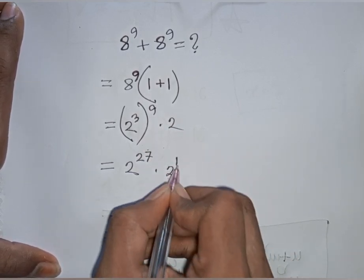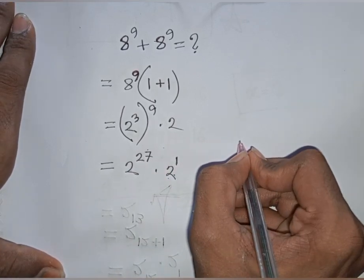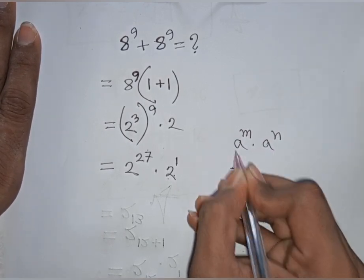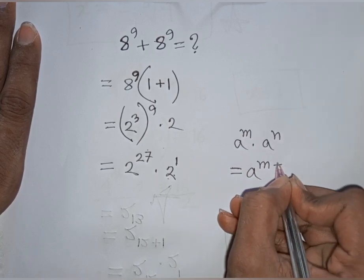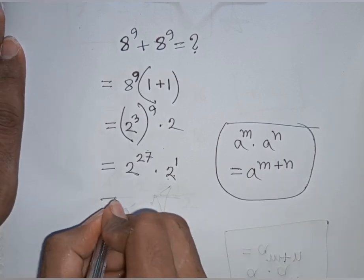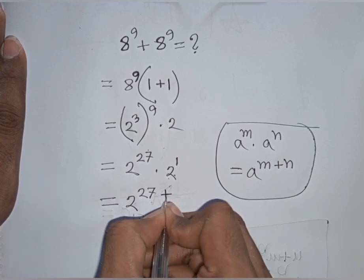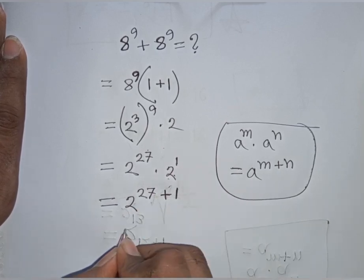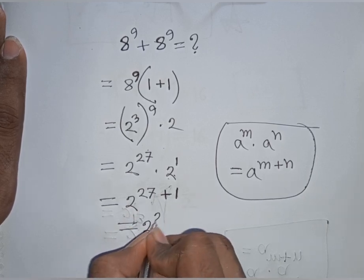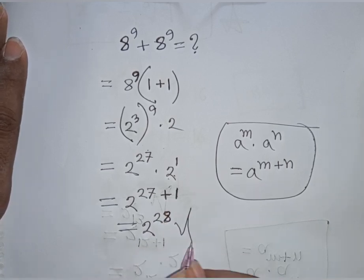Since we have the same base 2 but different powers, we apply the rule a^m times a^n equals a^(m plus n). So we get 2^(27 plus 1) equals 2^28. This is our final answer.